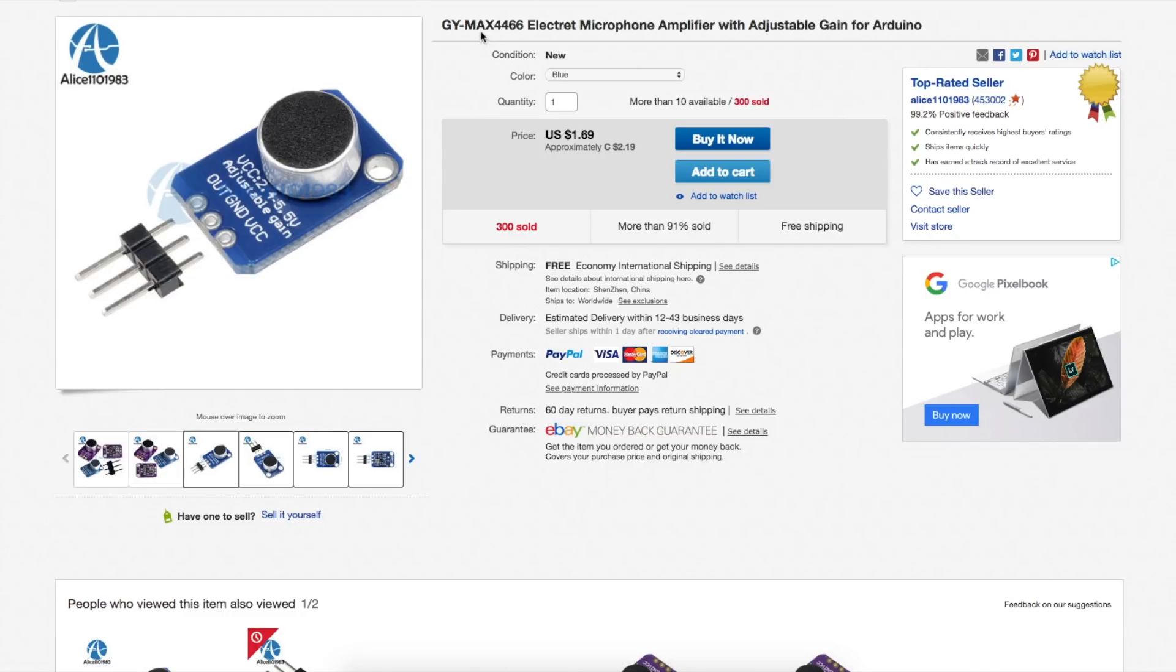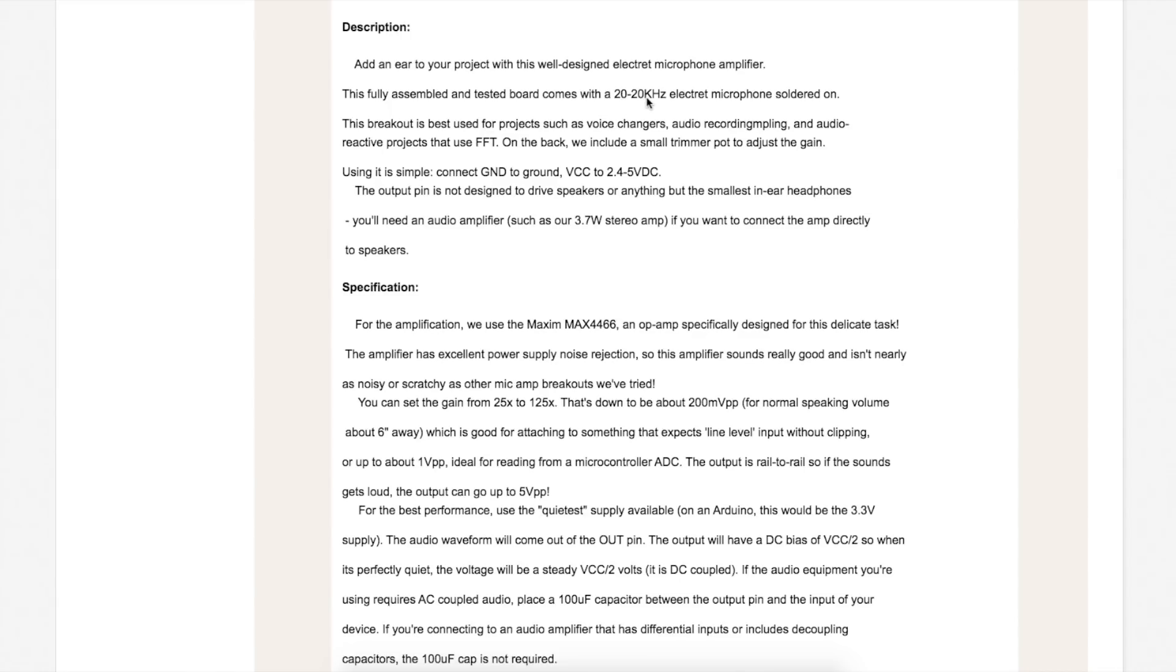When I looked up the specs, it's supposed to work over 20 Hz to 20 kHz, the audio range. So basically I wanted to test that and make sure it looks relatively clear on the output and has gain. It does say 20 Hz to 20 kHz and you can set the gain from 25 times to 125 times.